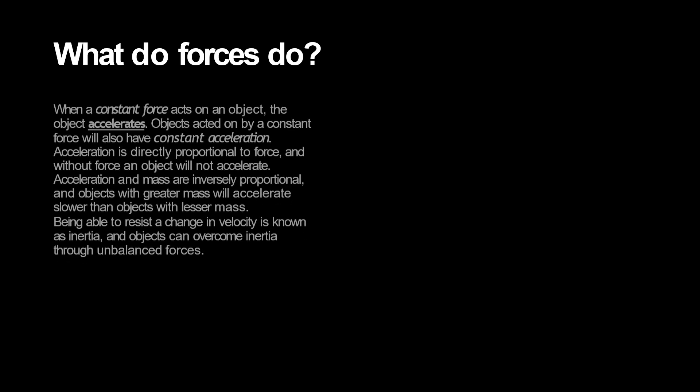We have already established that forces cause motion. But what happens when a force constantly acts on an object versus when a force only initially acts on an object? Constant forces cause objects to accelerate. Objects with a constant force will have a constant acceleration. If a rocket was in a vacuum, the initial force would cause it to move at a constant velocity. On the contrary, if the rocket had its thrusters on, the force would be constant, and the rocket would constantly accelerate to higher speeds as long as the force was acting on the rocket.